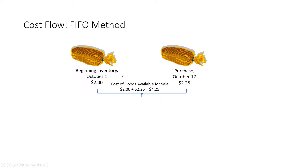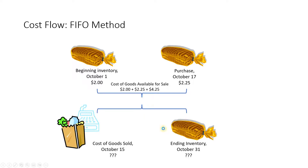My goods available for sale is beginning inventory plus purchases, so it would be two units, but the cost of those goods available for sale would be my $2 beginning inventory plus $2.25 purchase, which is $4.25. My goal is to divvy that up between cost of goods sold — the actual cost I'm going to assign to the units sold — and I'm going to assume that I made one sale of one loaf of bread on October 15th, keeping it simple.